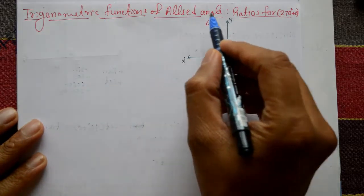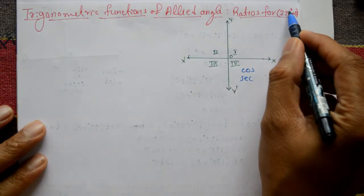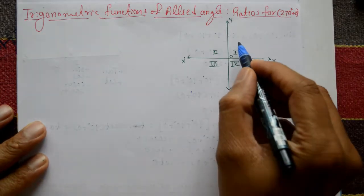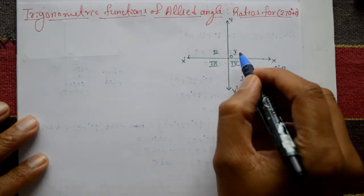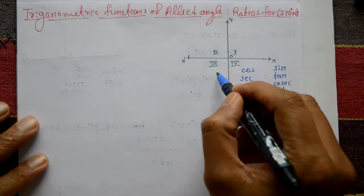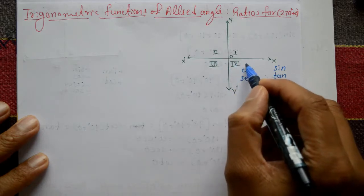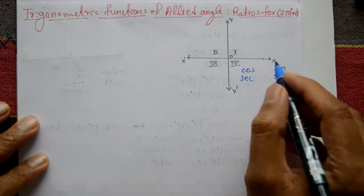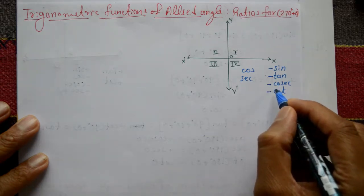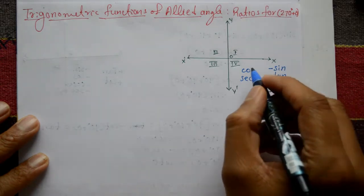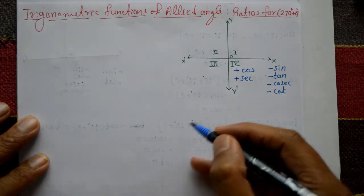We are finding trigonometric functions of allied angle ratios for 270 degrees plus theta. On the x-axis and y-axis, there are four quadrants. 270 degrees plus theta falls in the fourth quadrant. In the fourth quadrant, sine, tan, cosec, and cot ratios are negative; only cos and secant are positive ratios.